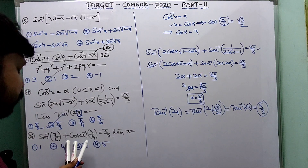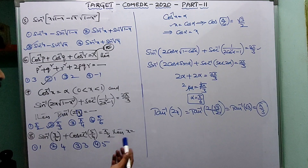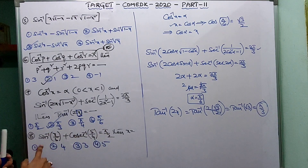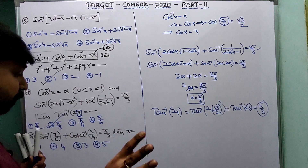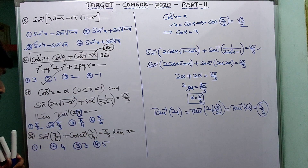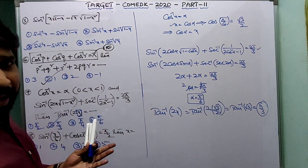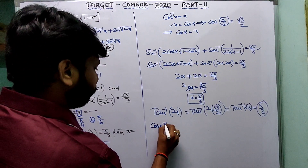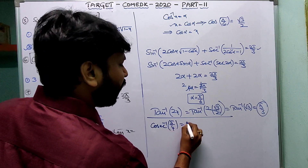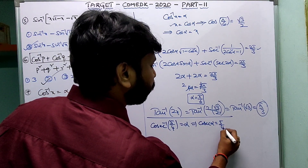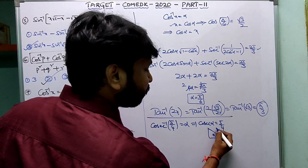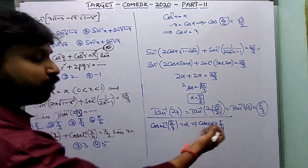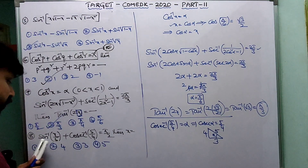Question: sin⁻¹(x/5) + cosec⁻¹(5/4) = π/2. Find x. The key result is sin⁻¹x + cos⁻¹x = π/2, so we need to convert cosec⁻¹(5/4) into cos⁻¹. Let α = cosec⁻¹(5/4), so cosecα = 5/4, meaning opposite = 4, hypotenuse = 5.